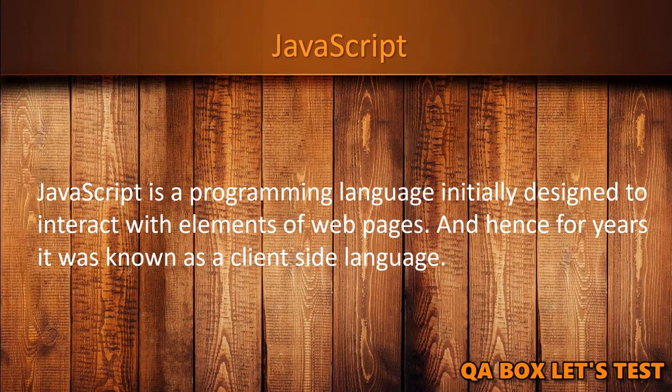JavaScript is a programming language initially designed to interact with elements of web pages, and hence for years it was known as a client-side language. It is often used with HTML and CSS to enhance the functionality of a web page, such as validating forms, creating interactive maps, adding animations to the website, and so on. When a web page is loaded — after HTML and CSS have been downloaded — the JavaScript engine in the web browser executes the JavaScript code, which then modifies the HTML and CSS to dynamically update the user interface.